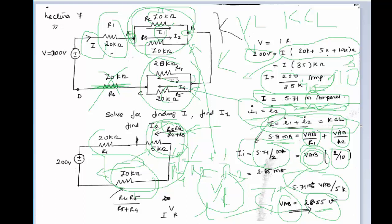In such problems, the question may ask for the equivalent current or the current through a specific resistance. You can use KVL, KCL, and series-parallel methods to solve them. We have not yet seen network theorems; after this we will see network theorems which allow solving such circuits more quickly using specific methods. If you like this video, please subscribe, like and comment.